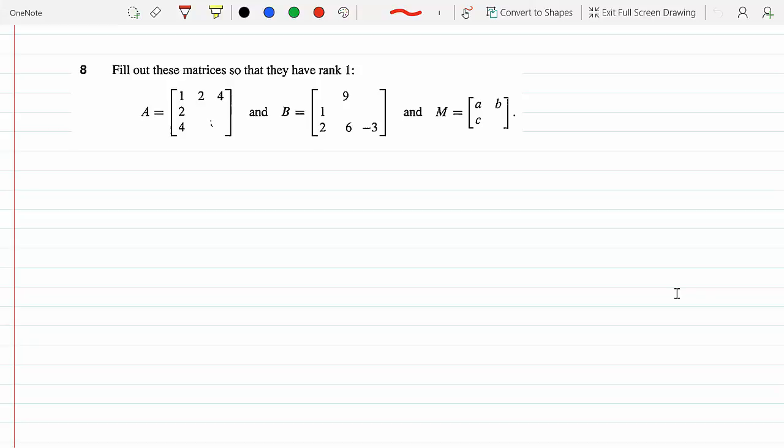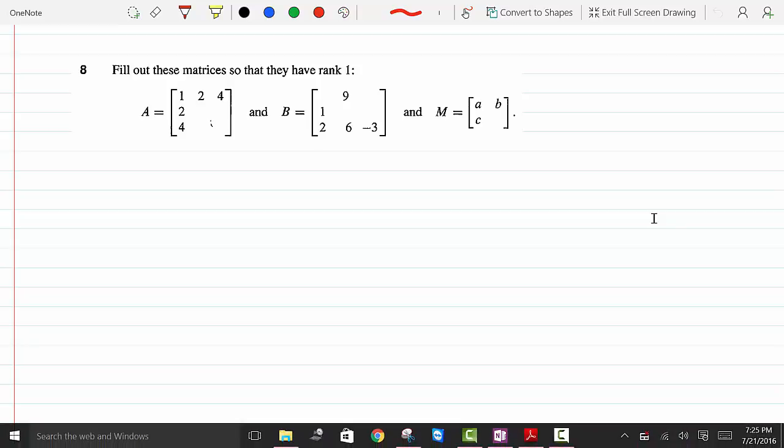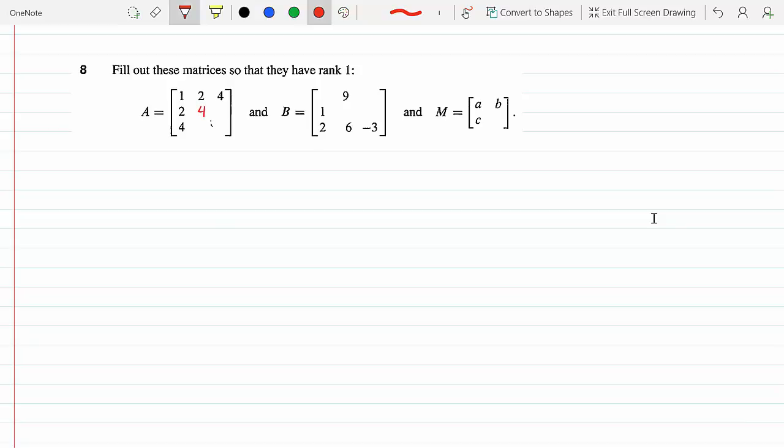And the columns are linearly dependent. So if A_12 is 2, that's twice 1, so the first column will have the pivot in it. Yeah, so that means the second column will just have to be twice the first column, and that easily tells us that if we go down we have a 4 and an 8.